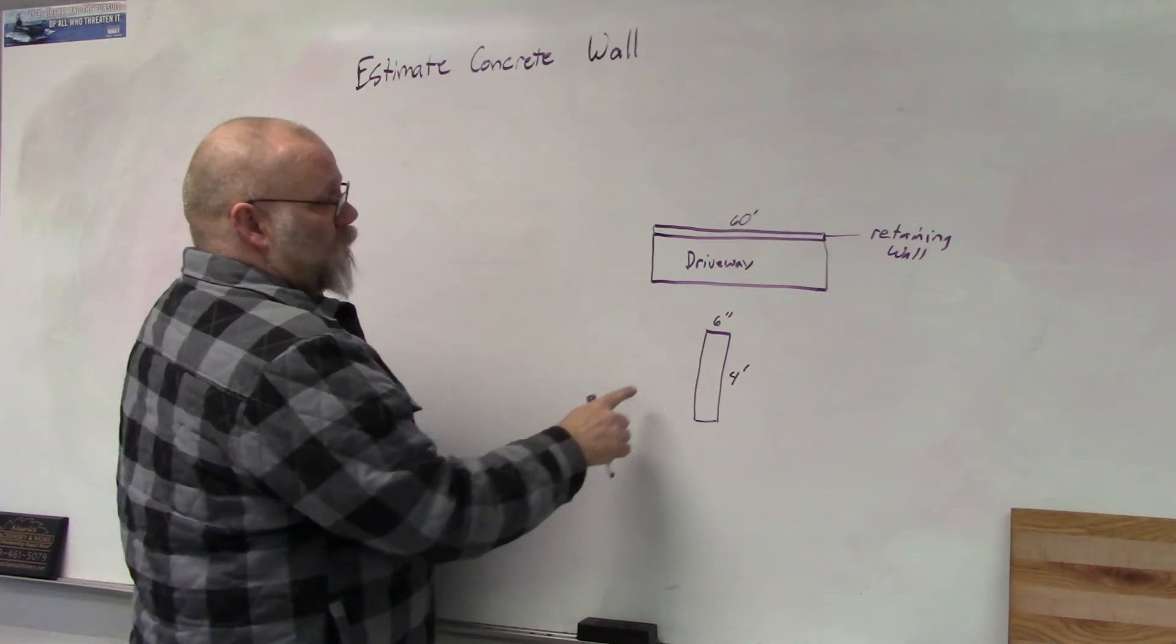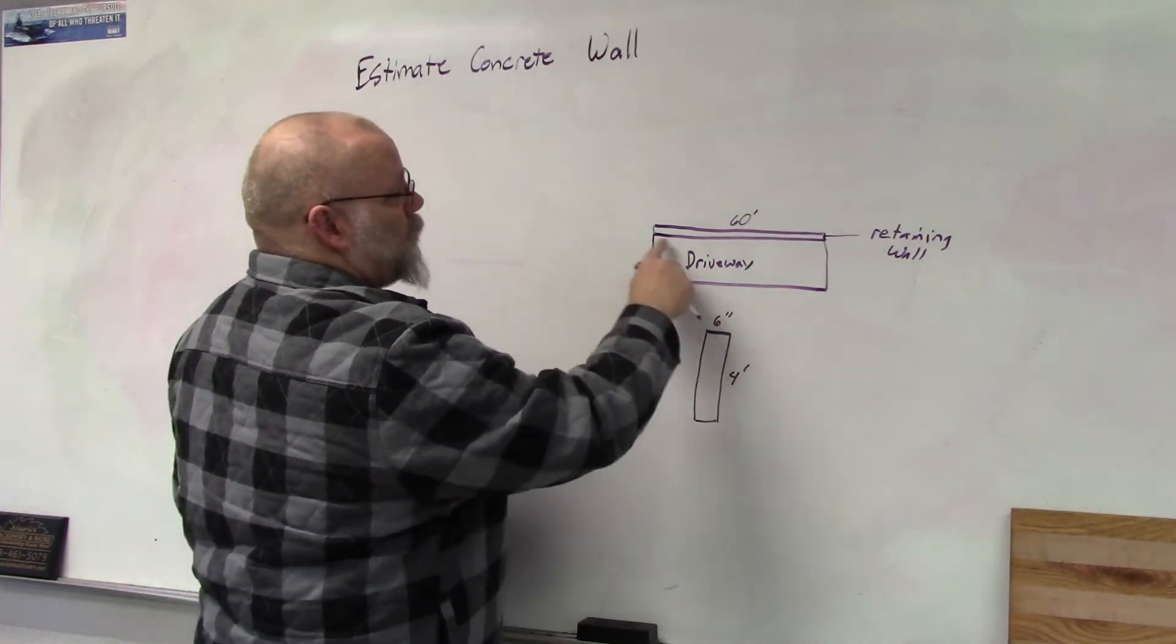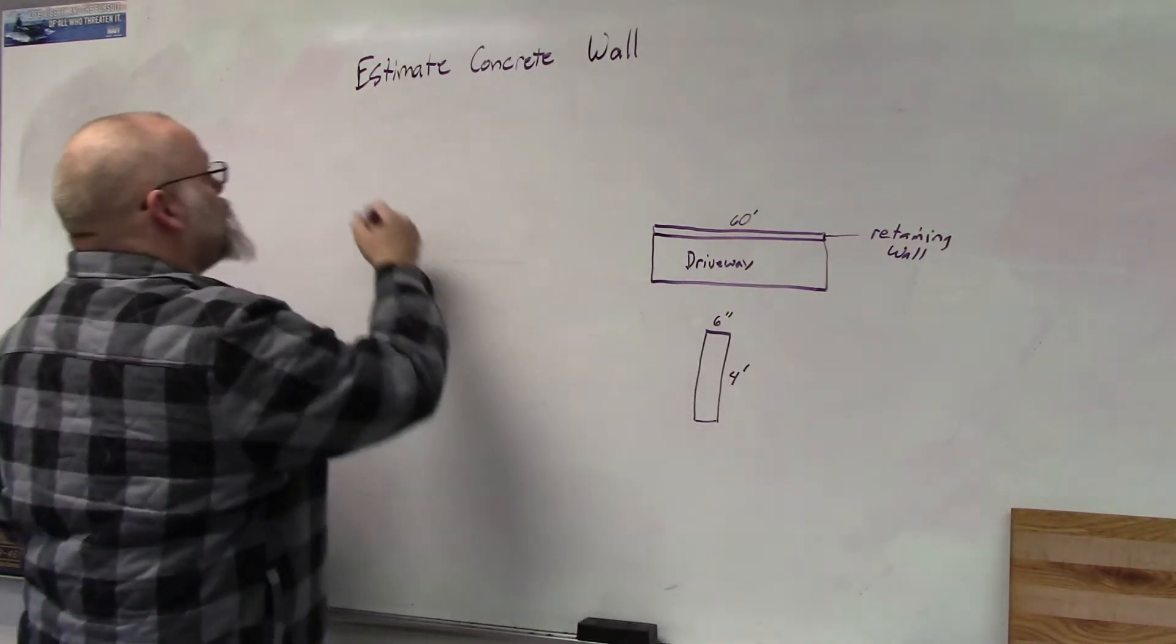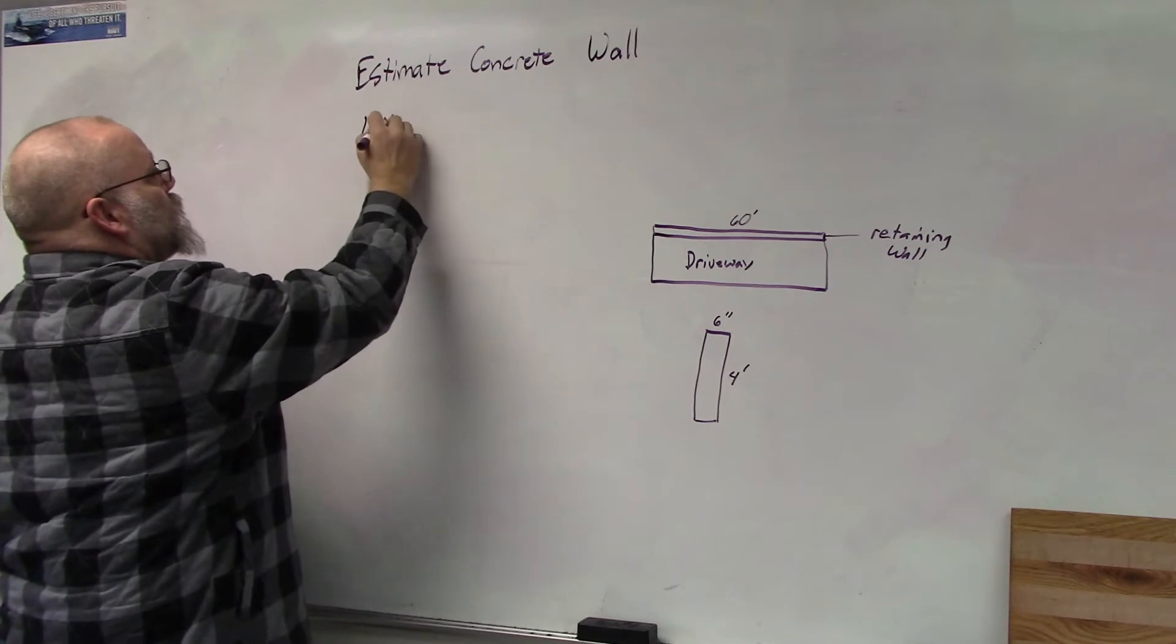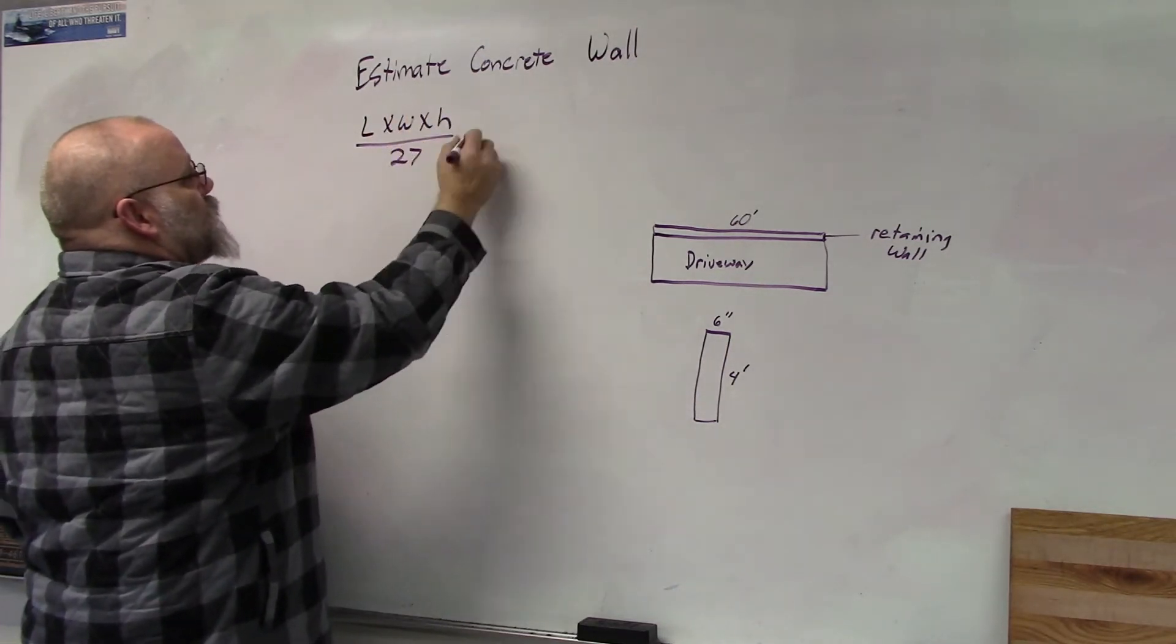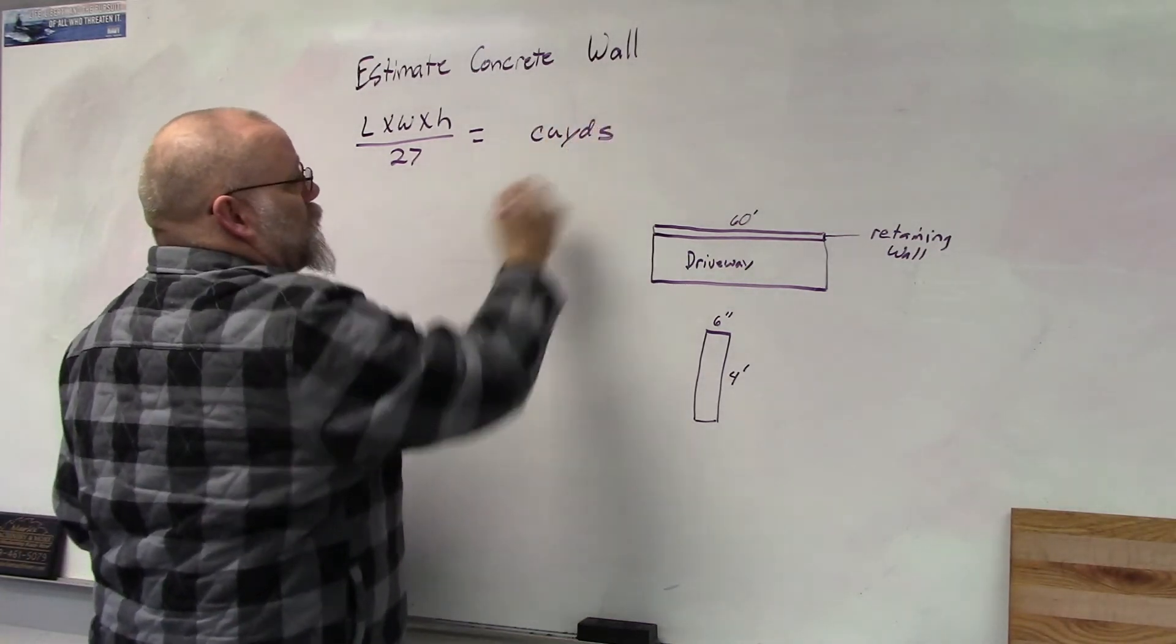The retaining wall is going to be six inches wide and four feet tall, and of course the length of my driveway is 60 feet. So the equation would be length times width times height divided by 27 to give the answer in cubic yards.